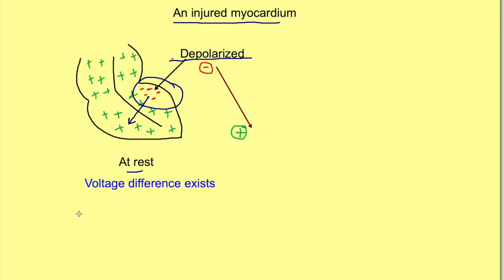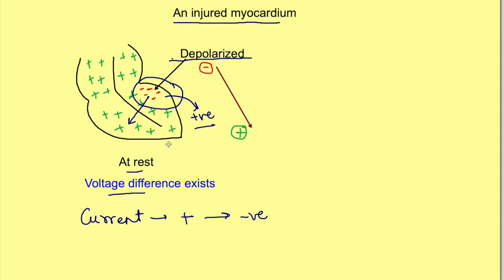Before we proceed, we are using the term 'current of injury,' which books also use, but here we are repeatedly talking about voltage difference. These are almost the same thing. Voltage difference is seen in the direction from negative to positive, but current flows from positive to negative. However, inside the depolarized cell, the inside is positive — so current inside is actually flowing from positive to negative as well. For understanding, I prefer the term voltage difference since in ECG we are recording voltage difference.